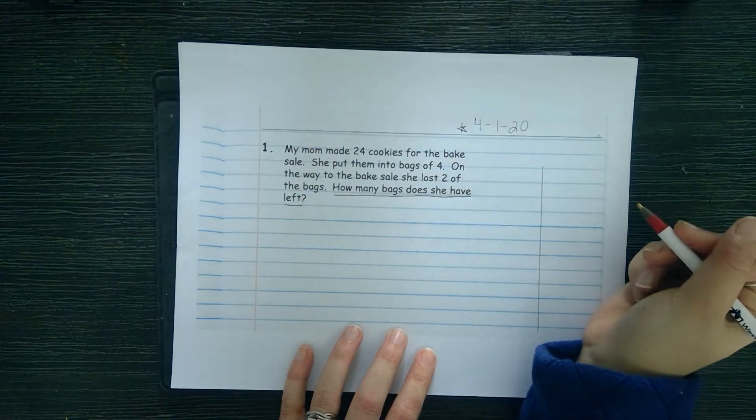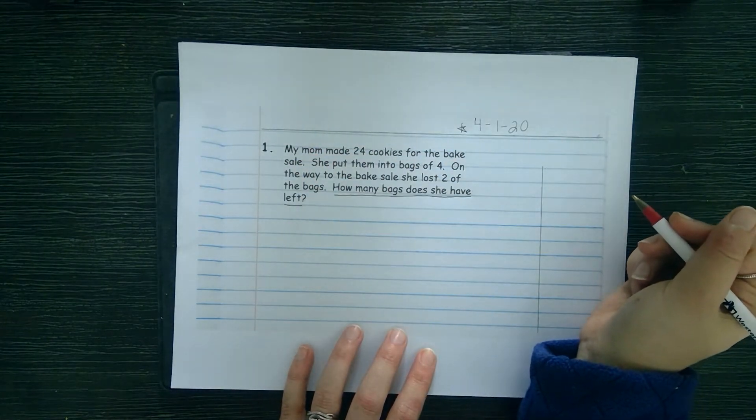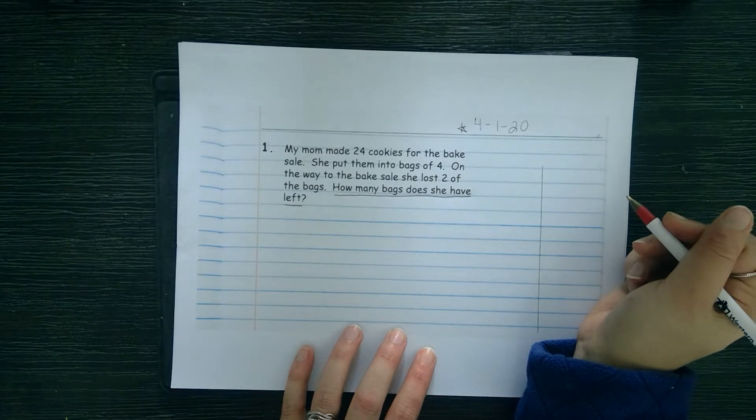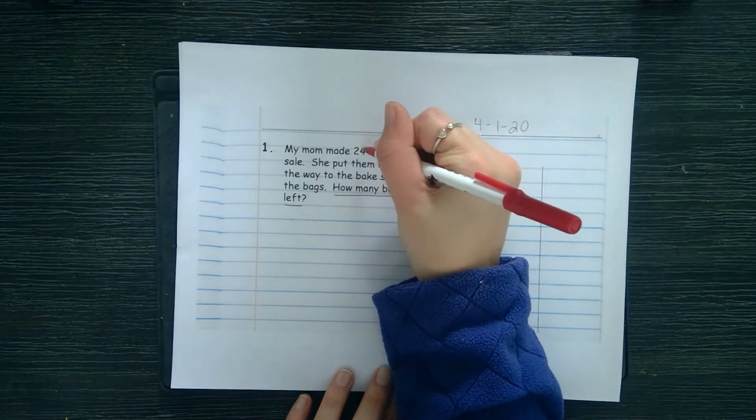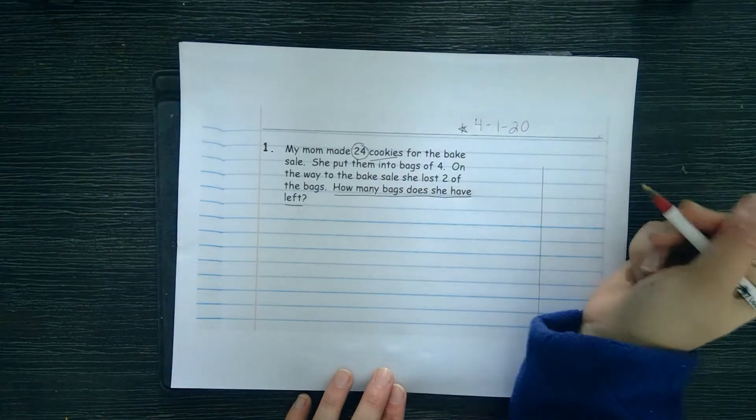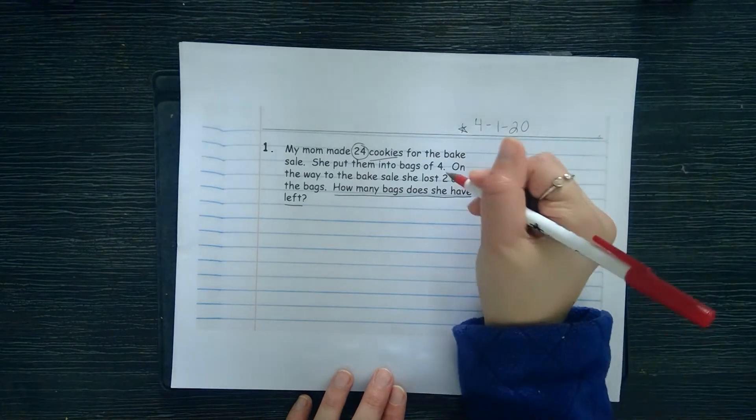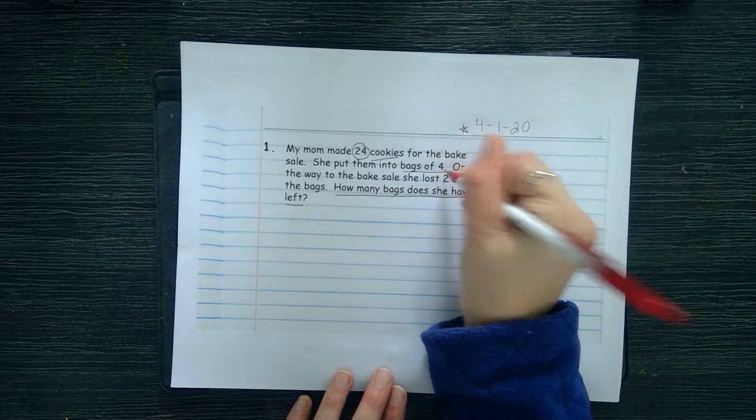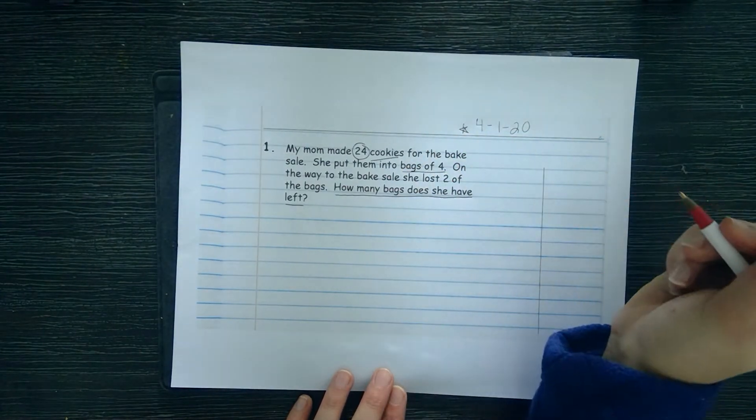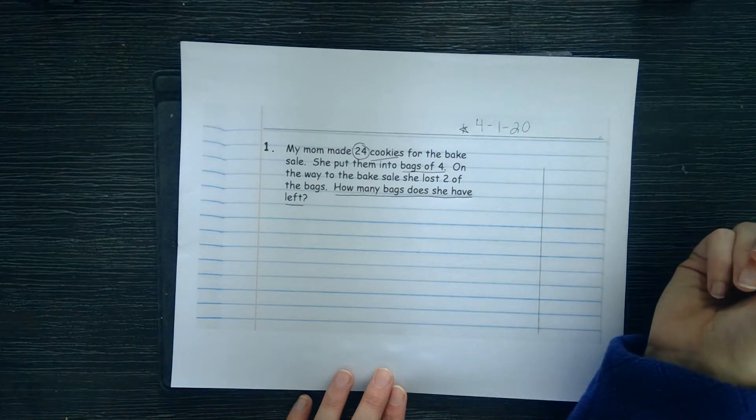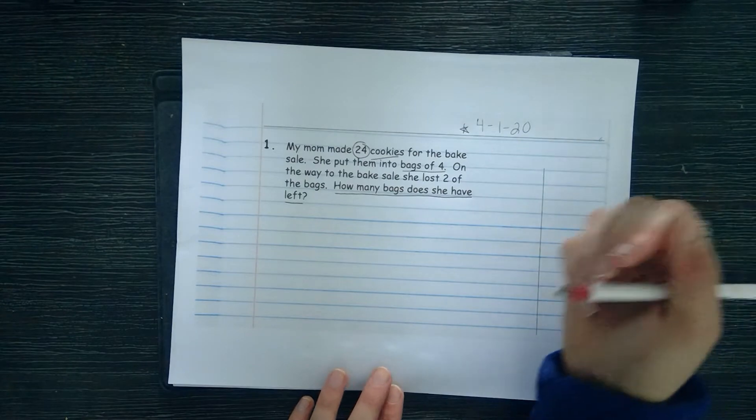We have to find out how many bags she has to begin with. She has 24 cookies and she put them into bags of four, so I have equal groups of four. The size of the group is four, but I need to figure out the number of groups.